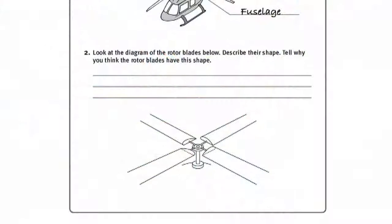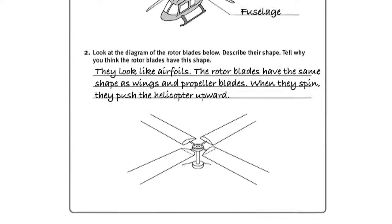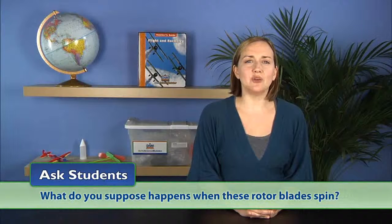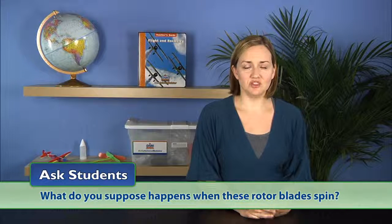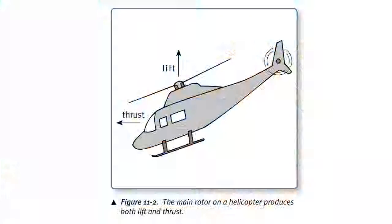Draw their attention to the cross-sectional diagram of the rotor blades on their activity sheets. They should recognize these as airfoils. Then ask, What do you suppose happens when these rotor blades spin? Students will probably conclude that rotor blades behave just like propeller blades, but instead of pushing the aircraft forward, they push it up.